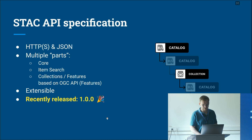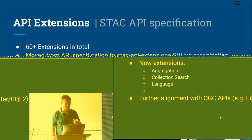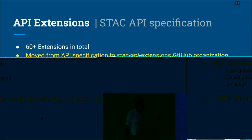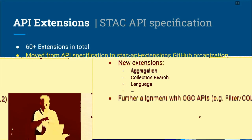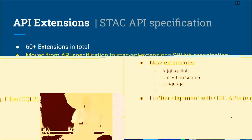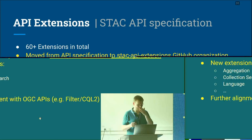The API is extensible again with around 10-plus extensions. They've been moved into a new organization and have different levels of maturity. New extensions include aggregation, collection search, and language. Collection search was always asked for and now has an implementation available. The filter extension is also important for defining fine-grained search queries; it builds on top of OGC API extensions but is not completely stable yet in the OGC world.